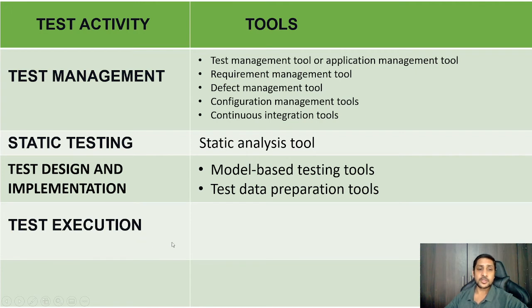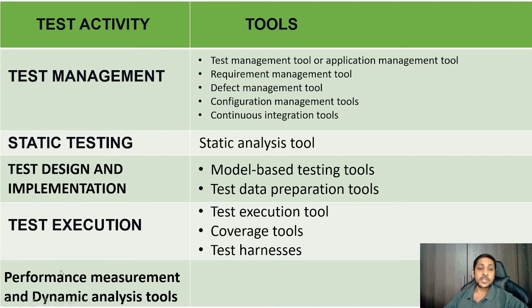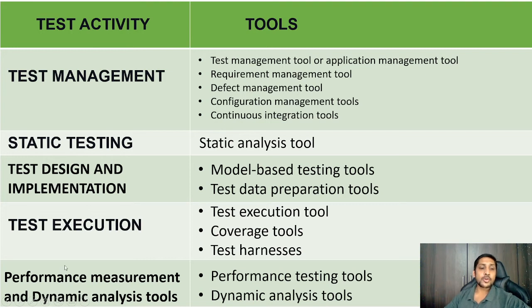For test execution, you need a test execution tool and a coverage tool, which shows how much of the test cases or code has been covered. Test harnesses are used for connecting two or three systems or subsystems. For performance management and dynamic analysis, you need a performance testing tool or dynamic analysis tool to measure performance or analyze dynamic characteristics of the system.